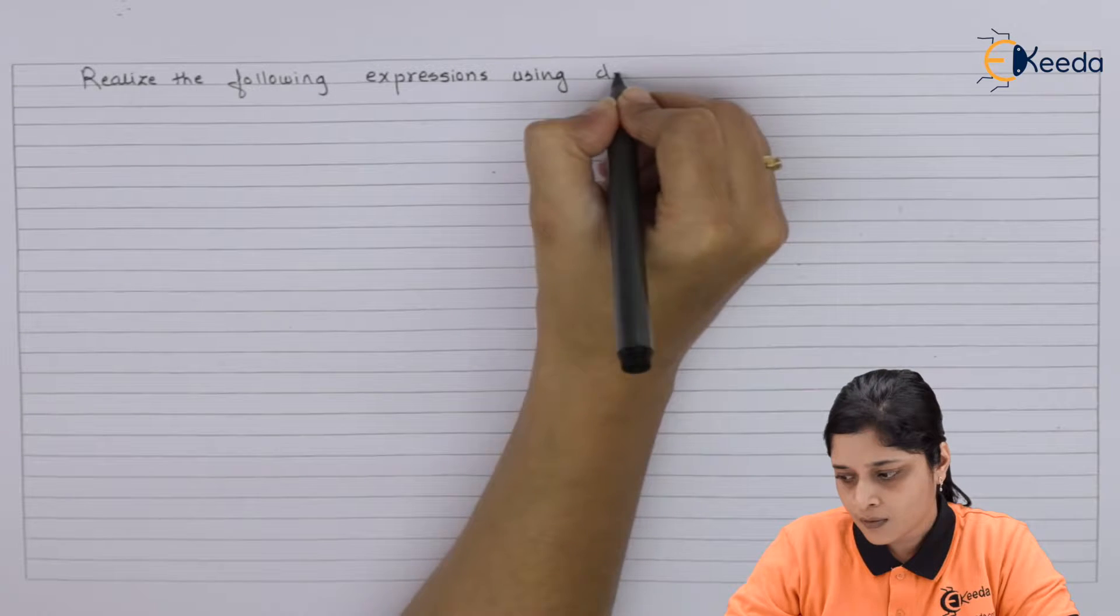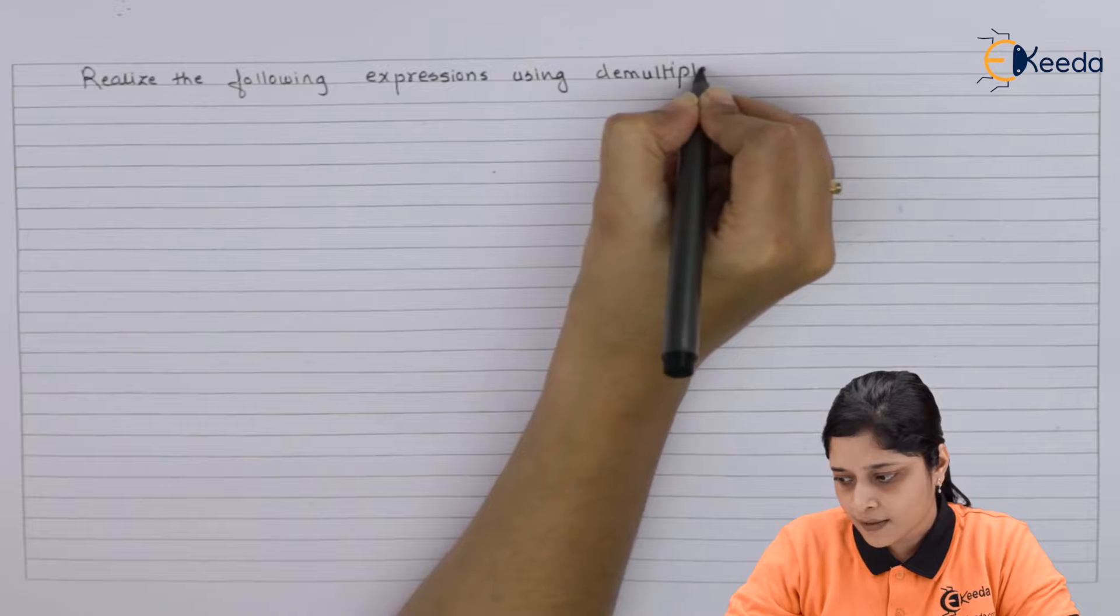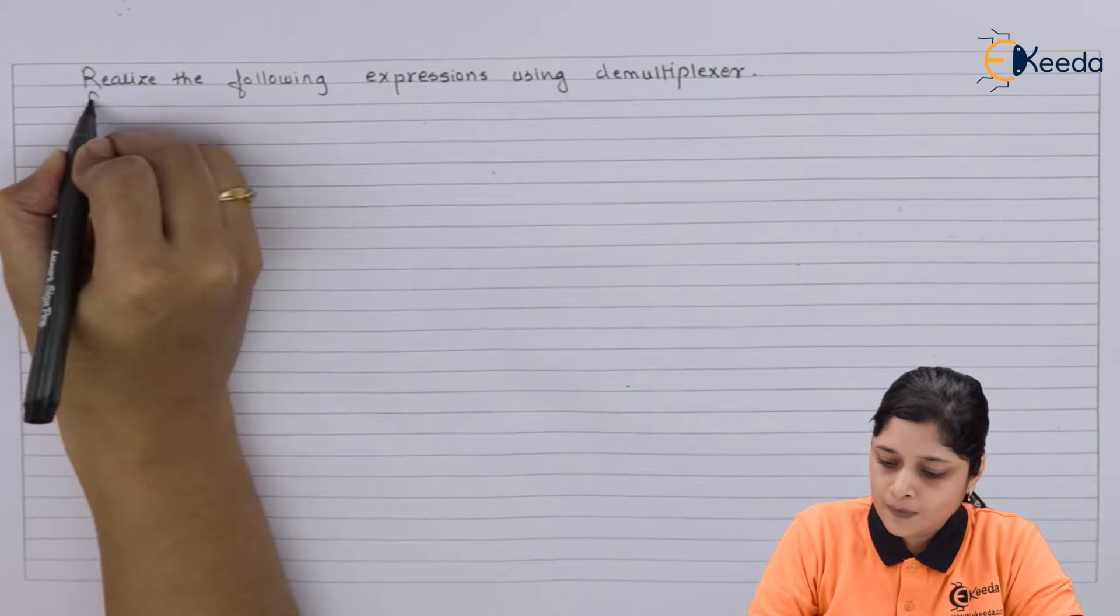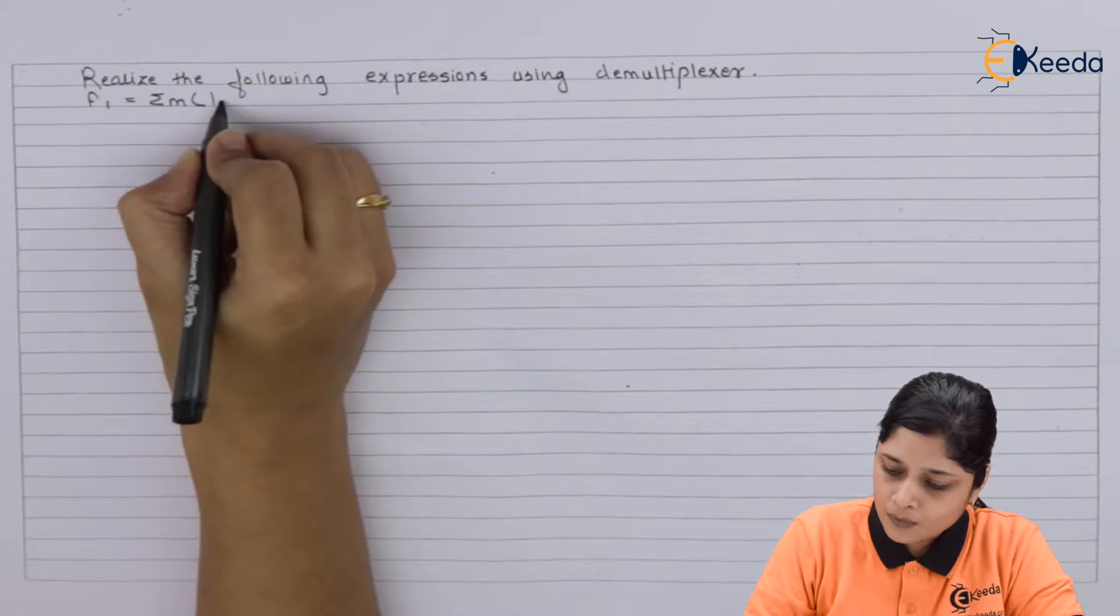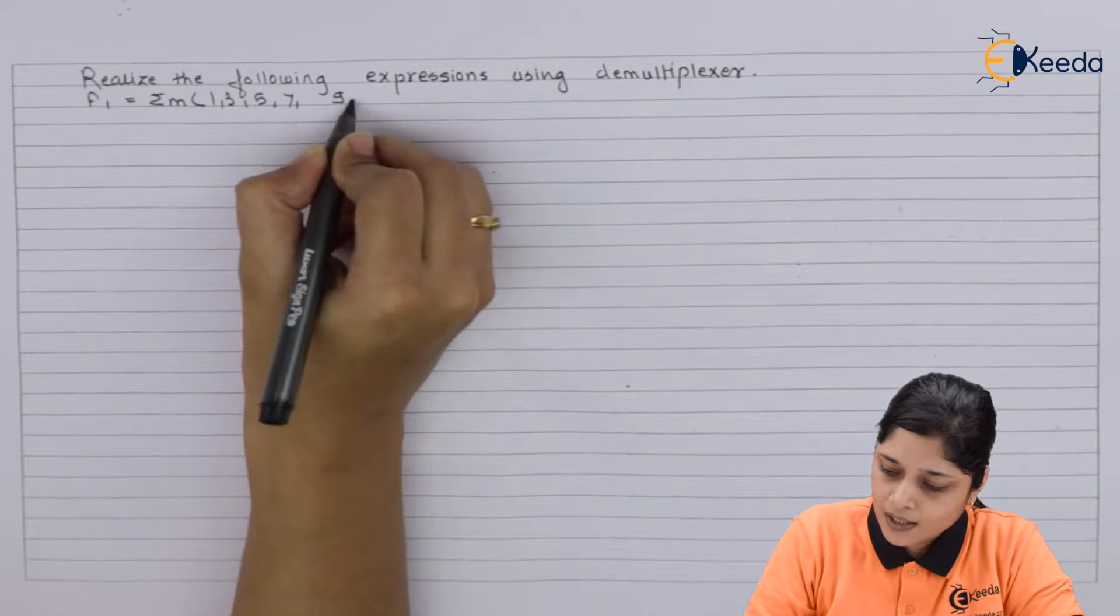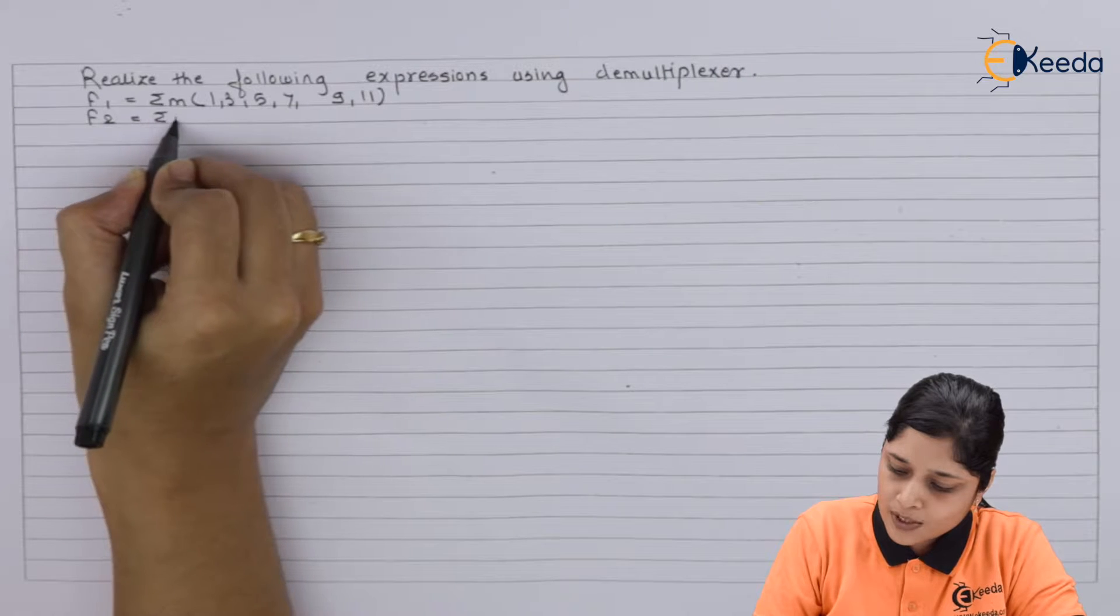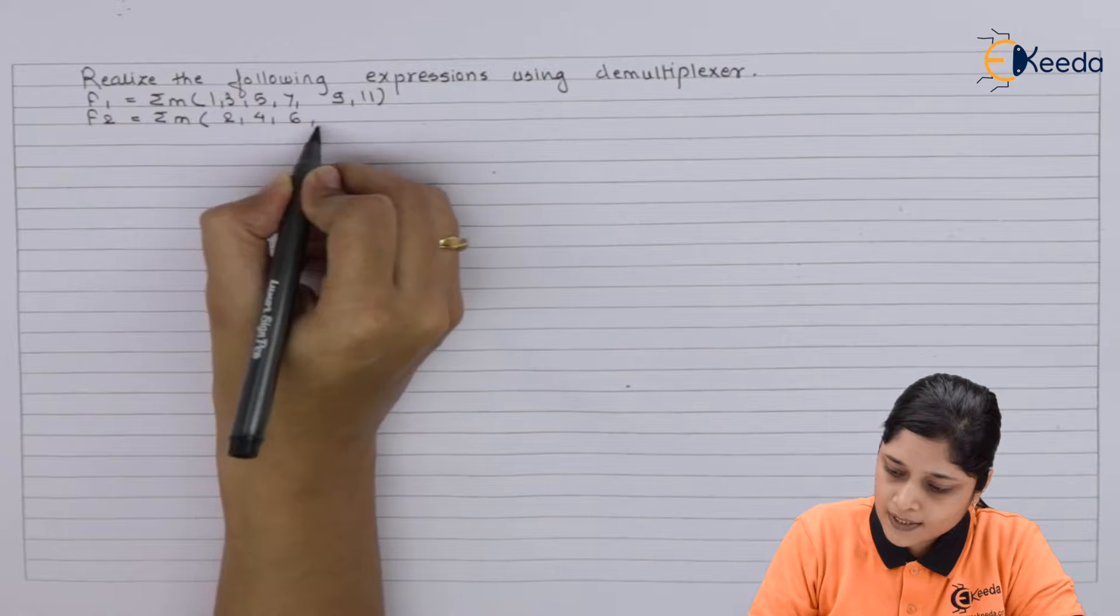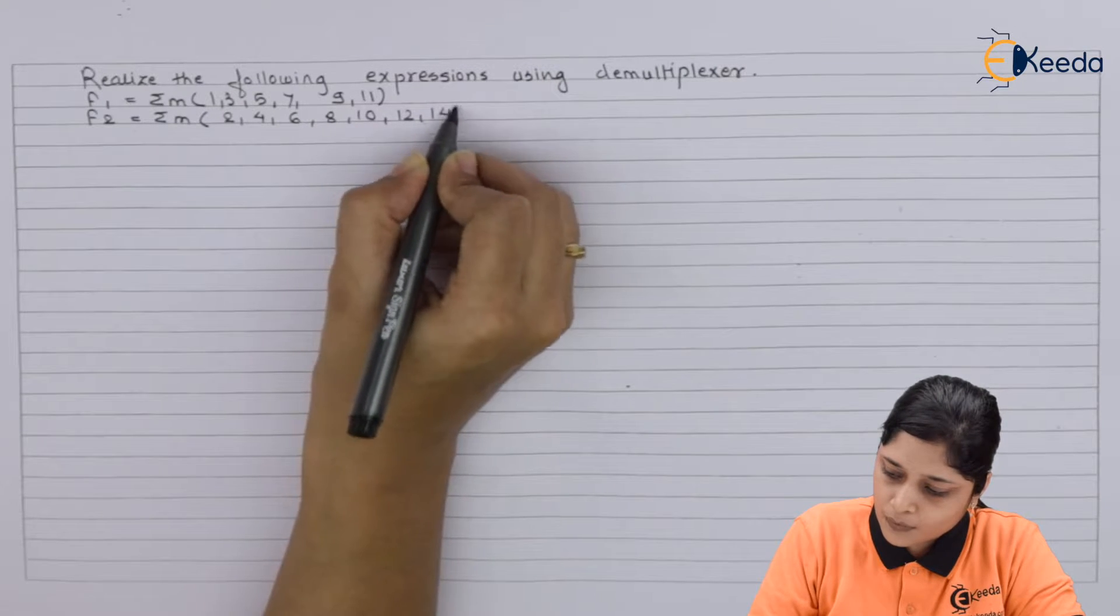Your expressions are f1 equals to summation m(1, 3, 5, 7, 9, 11). After that you have f2 equals to summation m(2, 4, 6, 8, 10, 12, and 14).